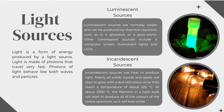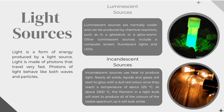Incandescent sources use heat to produce light. Nearly all solids, liquids, and gases will start to glow with a dull red color once they reach a temperature of about 525 degrees Celsius. At about 2300 degrees Celsius, the filament in a light bulb will start to produce all of the colors of the visible spectrum, so it will look white.